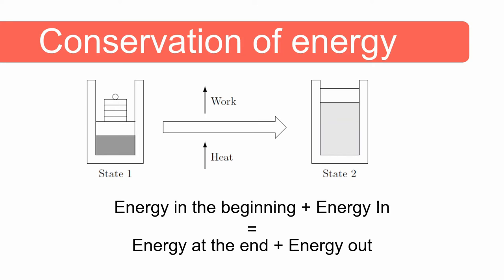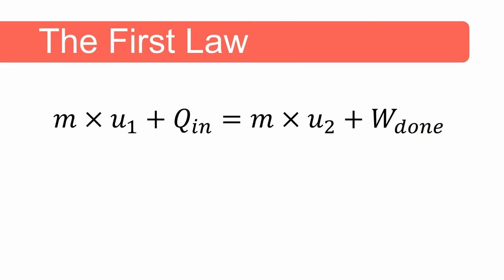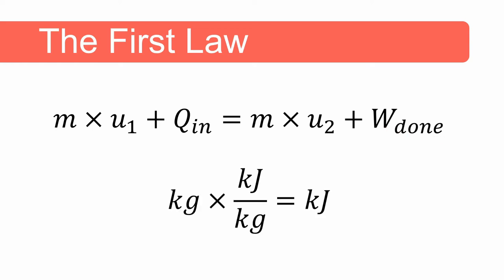We can formulate the first law using the notation introduced in the previous video. The energy in the control mass at the beginning equals the mass multiplied by the internal energy, plus the heat added. The energy at the end of the process equals the mass multiplied by the internal energy at the end — as this is a closed system the mass remains the same — plus the energy that left the system as work performed. The unit of mass is kilograms and internal energy is kilojoules per kilogram, so the unit in this equation is kilojoules.